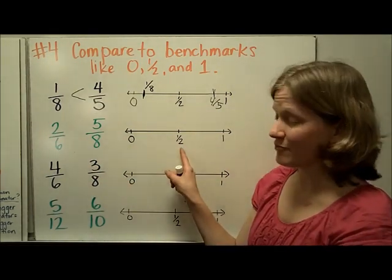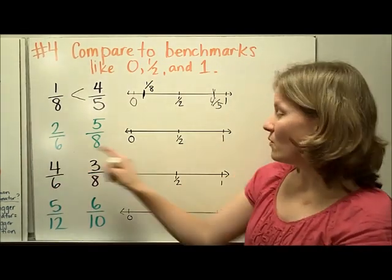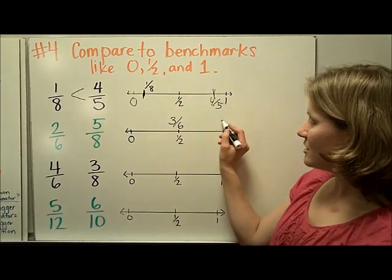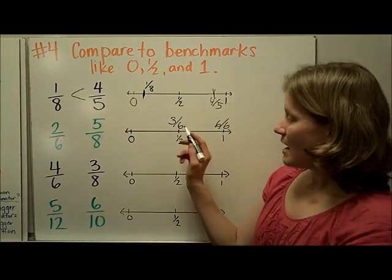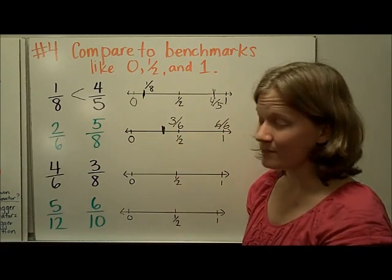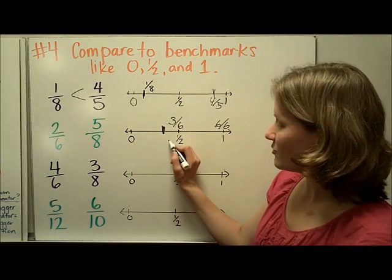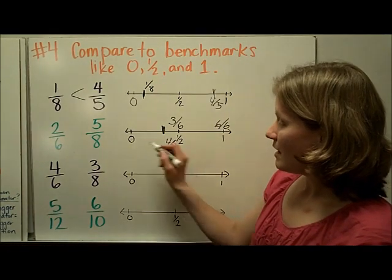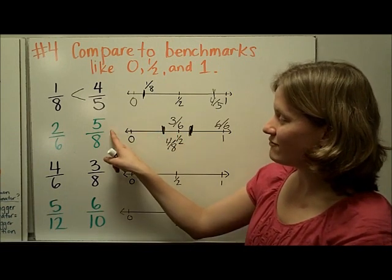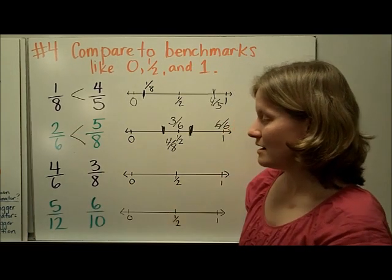In the next example, we use the one-half benchmark. What would one-half equal in sixths? Half of six would be three-sixths. Two-sixths is less than three-sixths, so two-sixths is less than one-half. Thinking about eighths, one-half would equal four-eighths, and five-eighths is bigger than that. So since five-eighths is bigger than one-half, and two-sixths is less than one-half, we see that two-sixths is less than five-eighths.